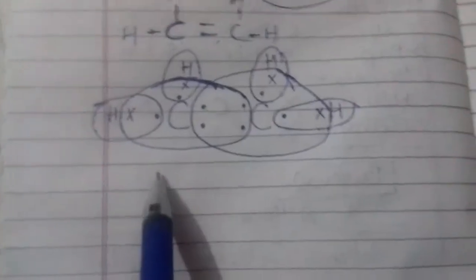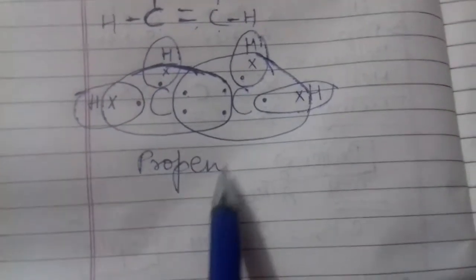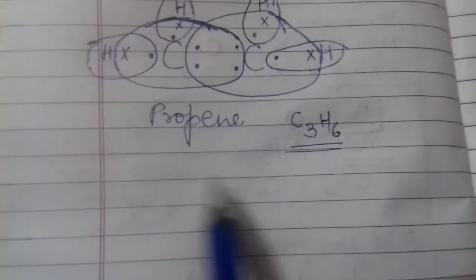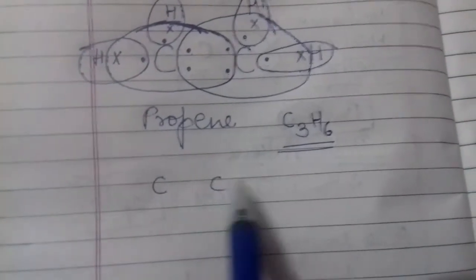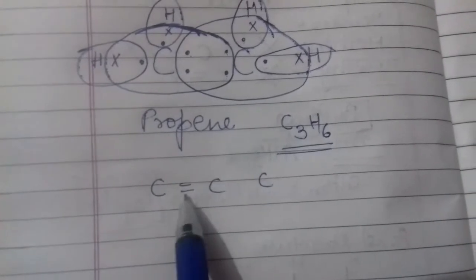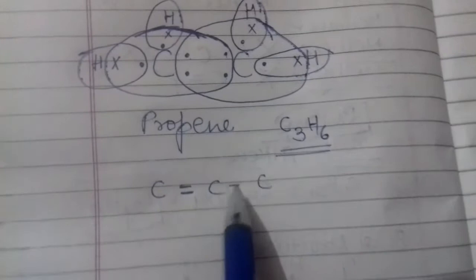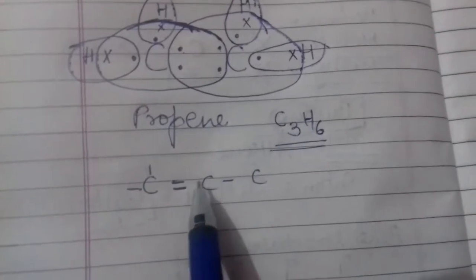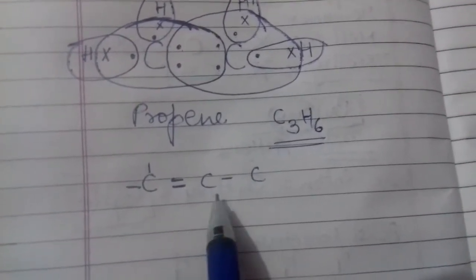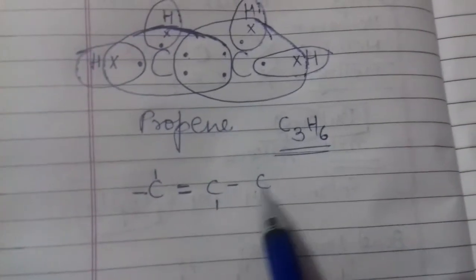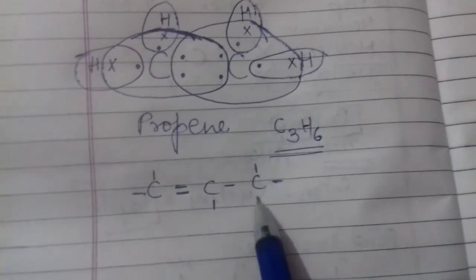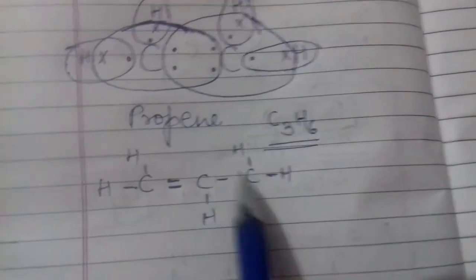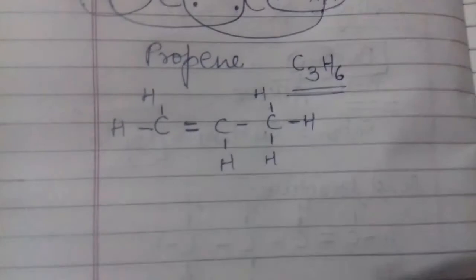इसी तरीके से अगर हमको बनाना हो जैसे propene का electron dot structure, तो propene का formula बनाएंगे। Prop में 3 carbon होते हैं और ene है, तो hydrogen double हो जाएगा - C3H6। इसकी पहले bond structure बना लेते हैं: 3 carbon लिखेंगे, ene है तो double bond लगाएंगे, बाकी में single bond लगेंगे। पहले carbon में 2 bond हो गए तो 2 और लगाने हैं; दूसरे carbon में 3 bond already हैं तो 1 और लगेगा; तीसरे carbon में 1 bond है तो 3 bond और लगेंगे - सब पे hydrogen put कर देंगे।